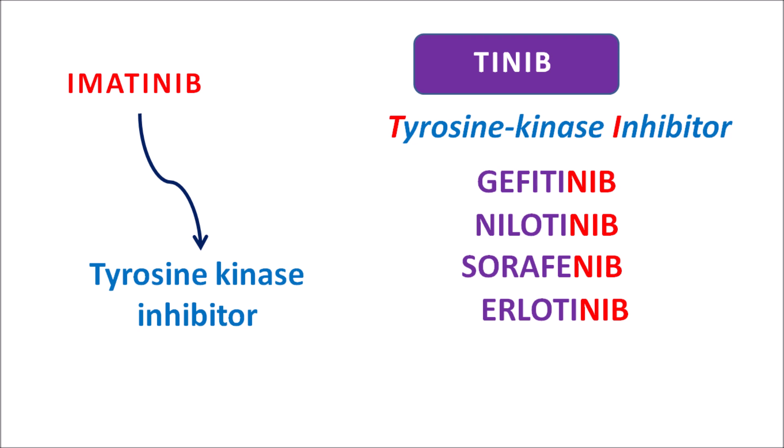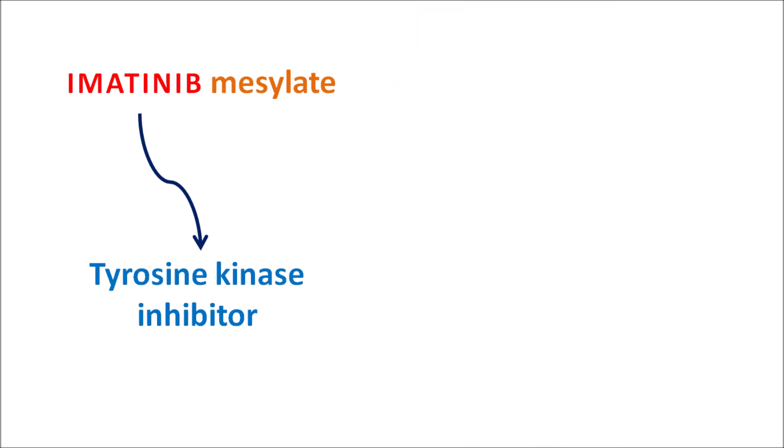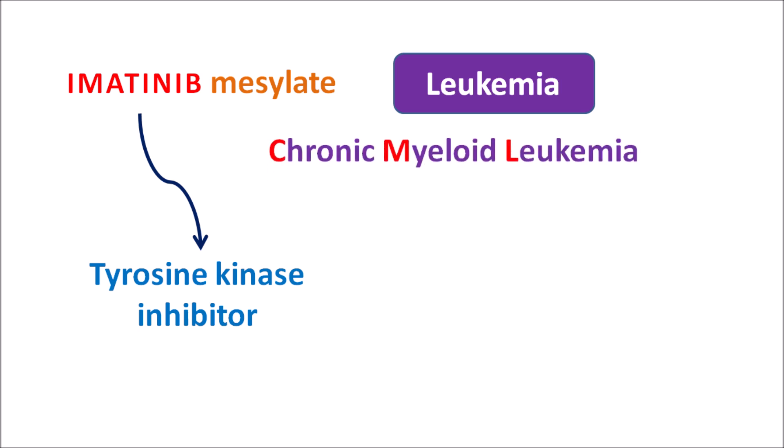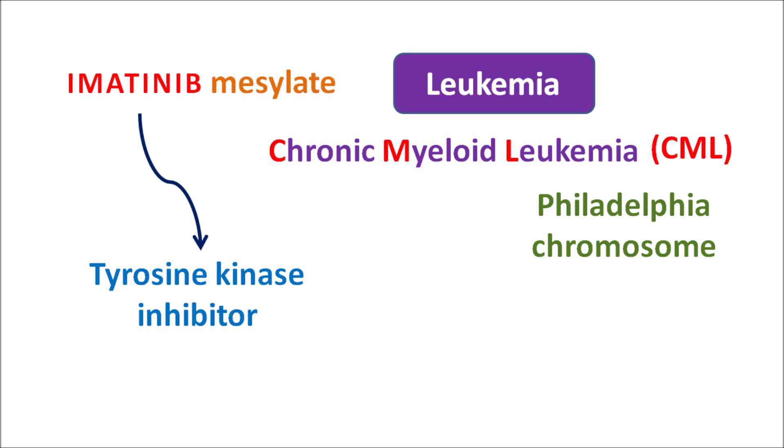Imatinib is a tyrosine kinase inhibitor given in the ester form mesylate. This drug can be used as an anti-cancer agent in the treatment of various types of leukemias. Among them, one important type is chronic myeloid leukemia, commonly known as CML. Imatinib mesylate proved useful in controlling leukemia within a few weeks of treatment. CML is a chronic disorder commonly observed in people with Philadelphia chromosome-positive patients.